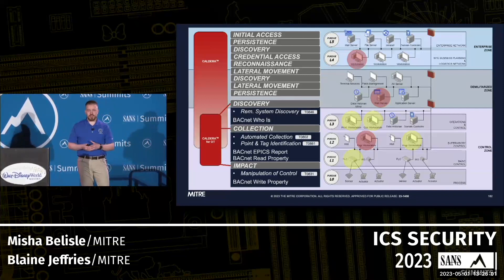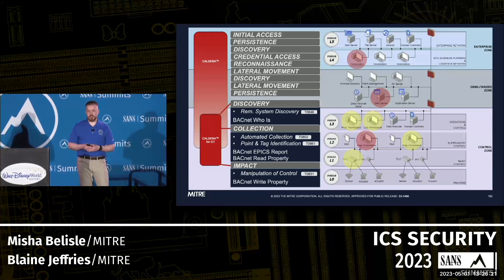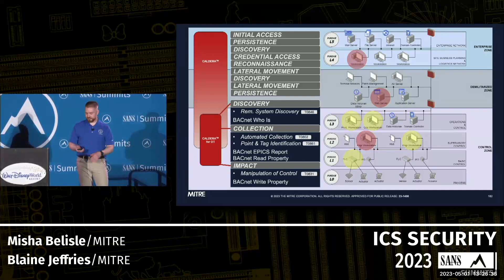Back to the network diagram — to summarize the additional TTPs we exposed: discovery, collection, and impact TTPs. You can have minimal impact using IT-type focused abilities with Caldera core at the lower architecture levels, but exposing native protocol functionality grants you a lot more in terms of what you can do and emulating a more advanced and realistic threat actor.